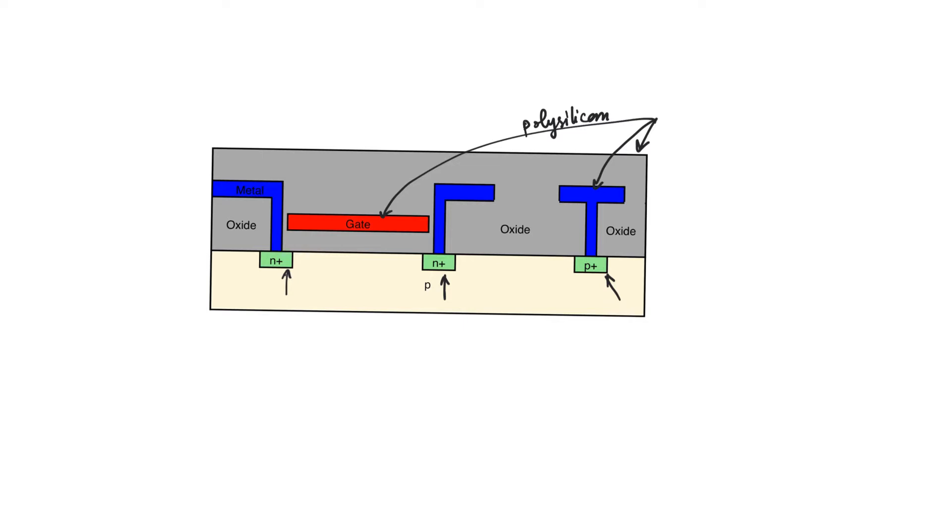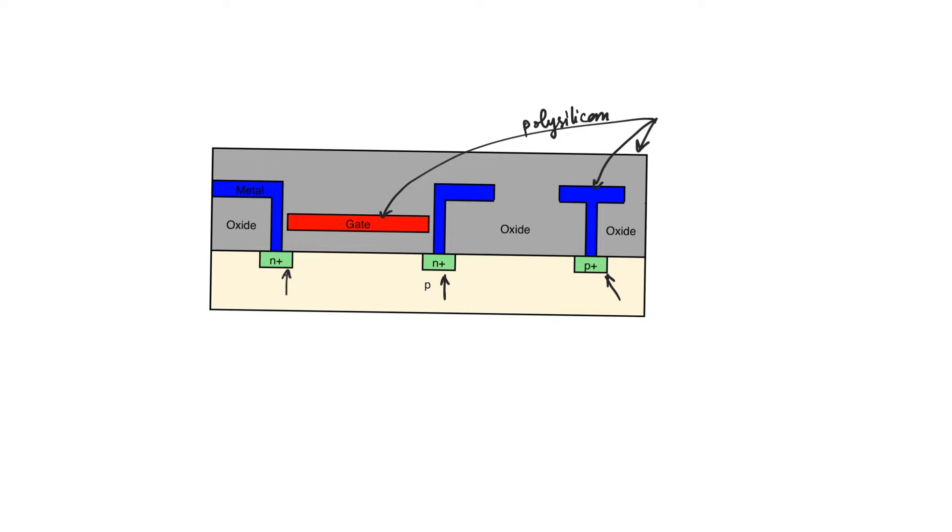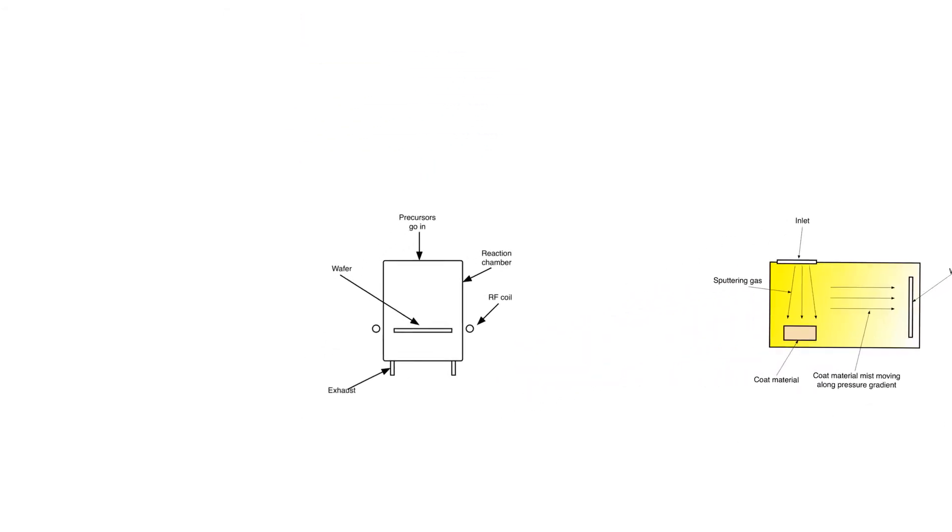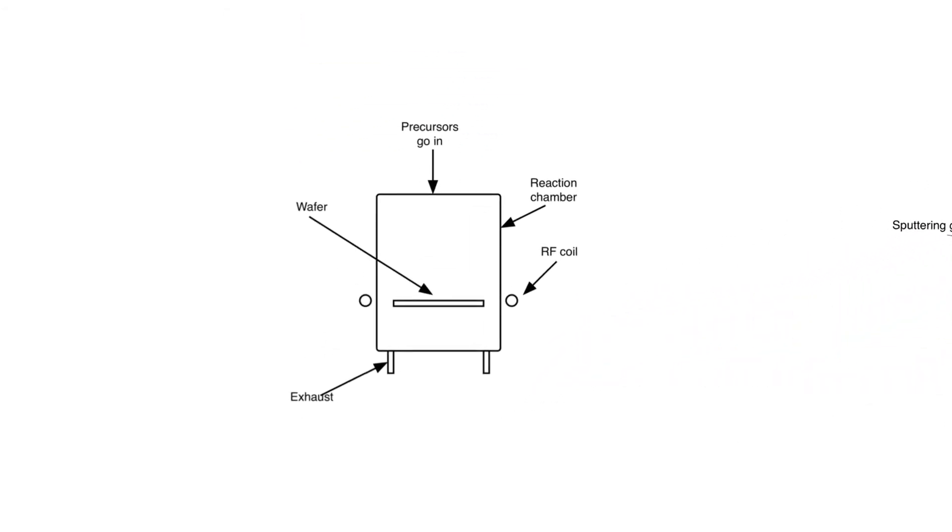There are three main ways in which we can create surface features. The first is chemical vapor deposition, CVD. Vapor deposition, in general, means that we basically spray the wafer with a vapor of a certain material, and then that vapor will condense and solidify on the surface of the wafer. In chemical vapor deposition, what happens is we introduce precursors, and precursors are chemicals, more than one chemical.